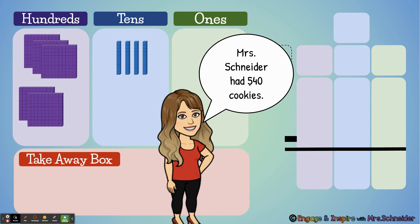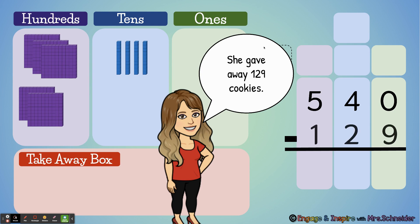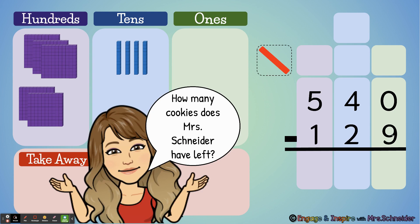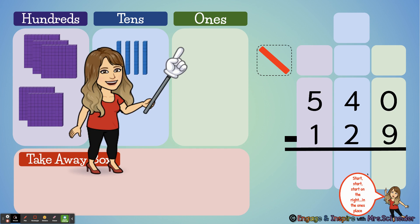Mrs. Schneider had 540 cookies - see, one, two, three, four, five hundred, and ten, twenty, thirty, forty. She gave away 129 cookies, so minus 129. How many cookies does Mrs. Schneider have left? That's what we're going to find out.